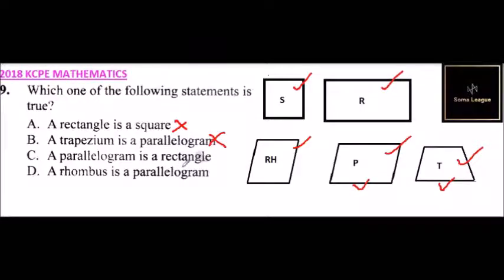We can say a parallelogram is a rectangle. The angles of a rectangle are 90 degrees, but the angles of a parallelogram are not 90 degrees. So we eliminate that.